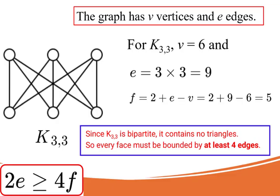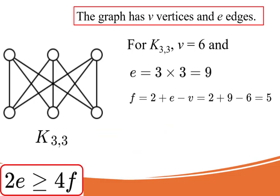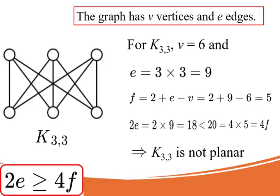From Euler's formula F equals 2 plus E minus V, substitute values F equals 2 plus 9 minus 6, which is 5. Now check 2 times 9 equals 18, 4 times 5 equals 20. But 18 is less than 20. Contradiction. That means K33 is also not planar.